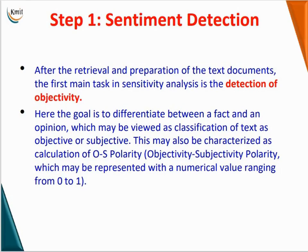Step 1 is sentiment detection. After the retrieval and preparation of text documents, the first main task in sentiment analysis is detection of objectivity. The goal is to differentiate between a fact and an opinion, which may be viewed as classification of text as objective or subjective. For example, 'The temperature today is 25 degrees Celsius' is a fact and is an objective sentence. 'Today's weather is perfect' is an opinion and is a subjective sentence. So objectivity means fact and subjectivity means opinion.